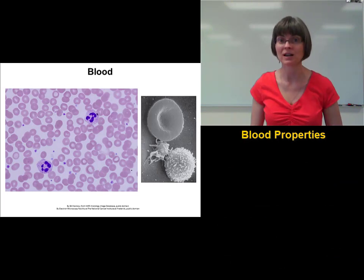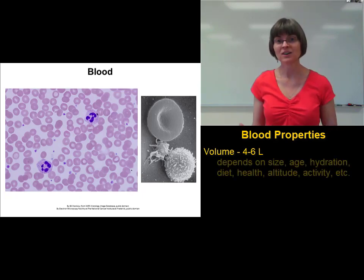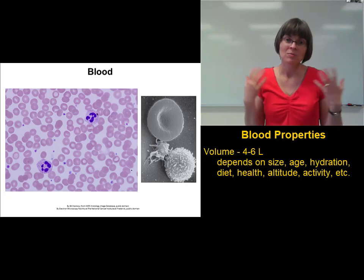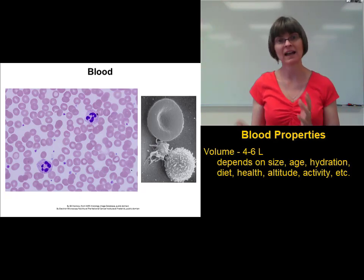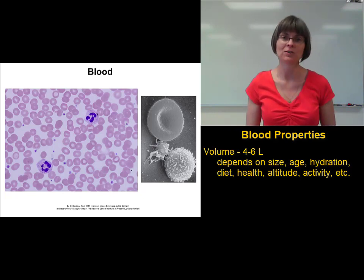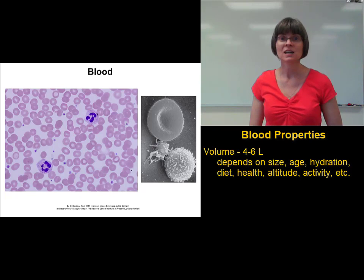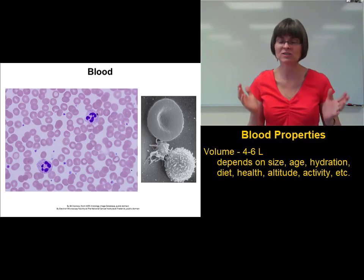Let's take a look at some of the properties of blood that are important for its function. The first is blood volume. The volume of blood in a normal, healthy adult is somewhere between 4 and 6 liters. This varies based on a number of factors, the most important being size — large people have more blood than small people. Other things that can affect blood volume include hydration level, age, level of activity, level of health, altitude, diet, and even the season of the year. But it should stay somewhere in that 4 to 6 liter range.